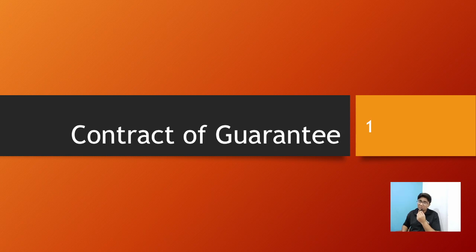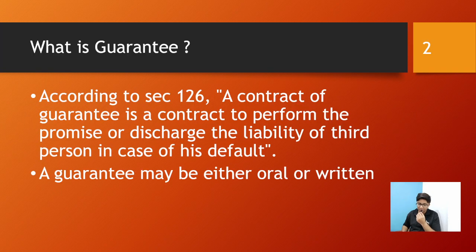First, let's understand the meaning of guarantee. According to Section 126, a contract of guarantee is a contract to perform the promise or discharge the liability of a third person in case of his default. It is a promise to perform or to discharge the liability of a third person.